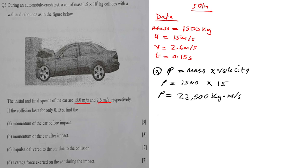I think this is clear — does anyone have a question? A student asks: why did you write kg·m/s with a dot? The dot simply stands for multiply. In our lecture class yesterday it was written as kg/ms, but it means the same thing — kg comes from the mass and m/s comes from the velocity.